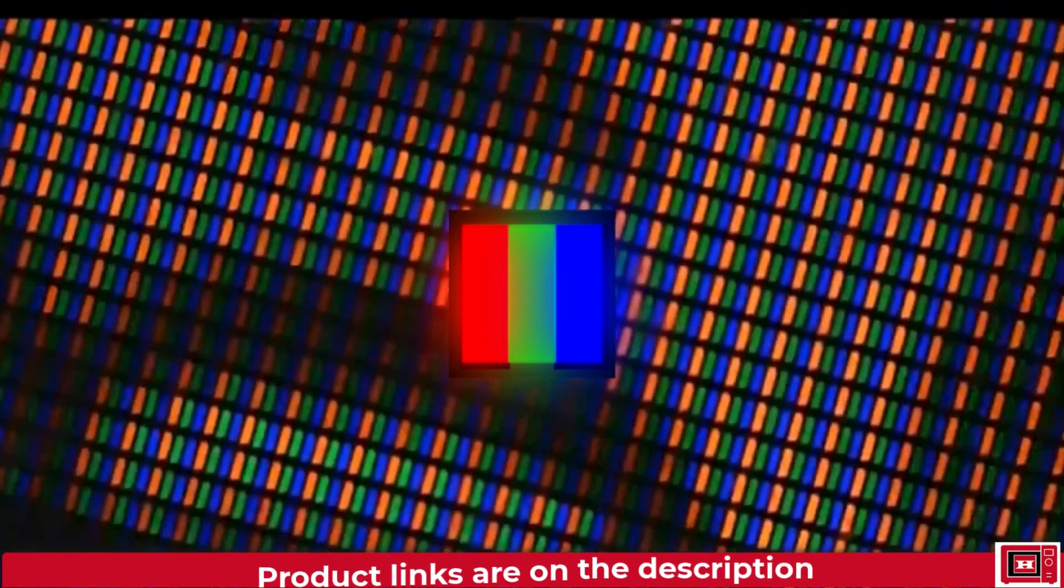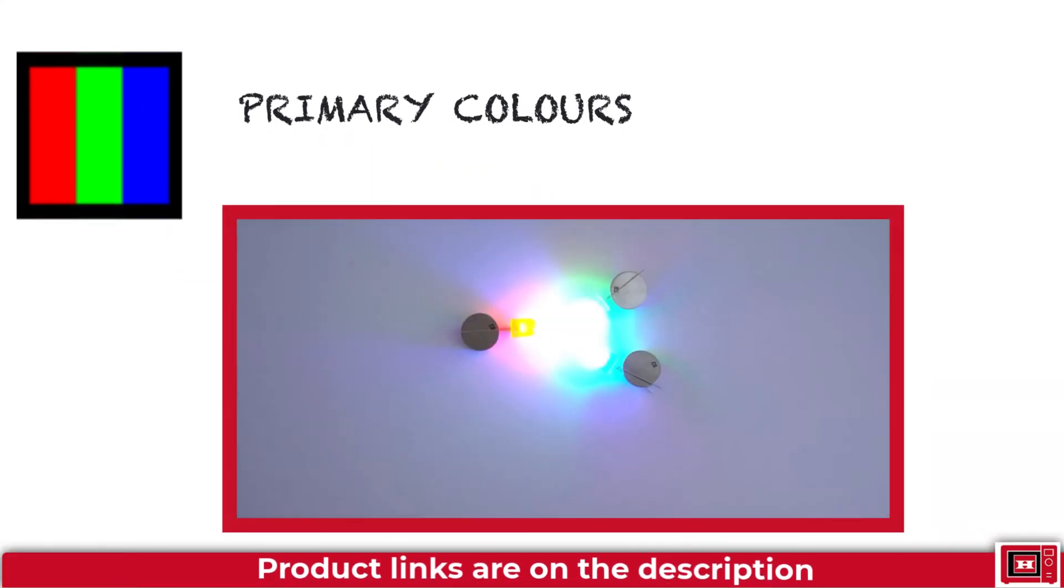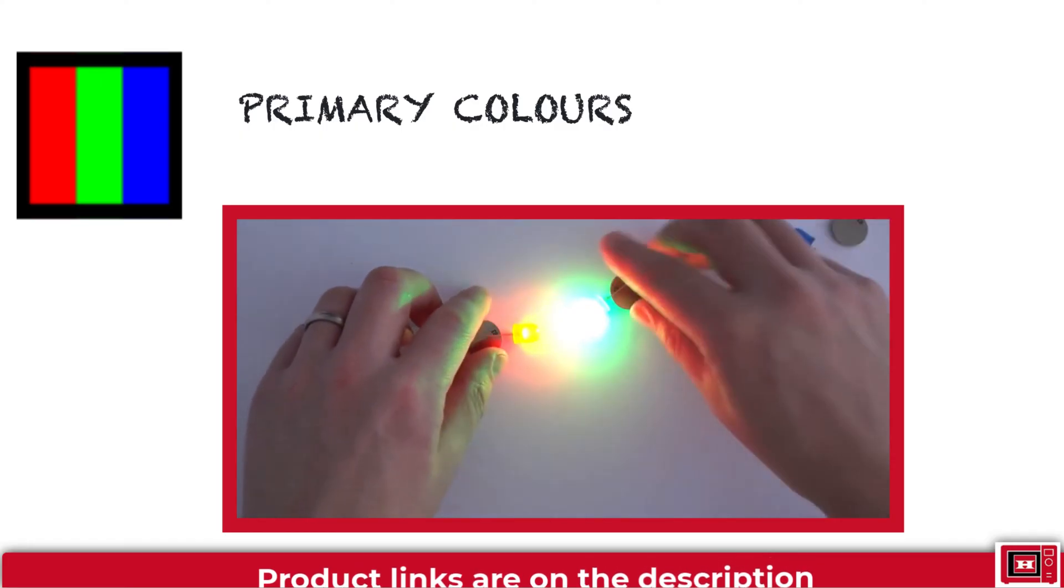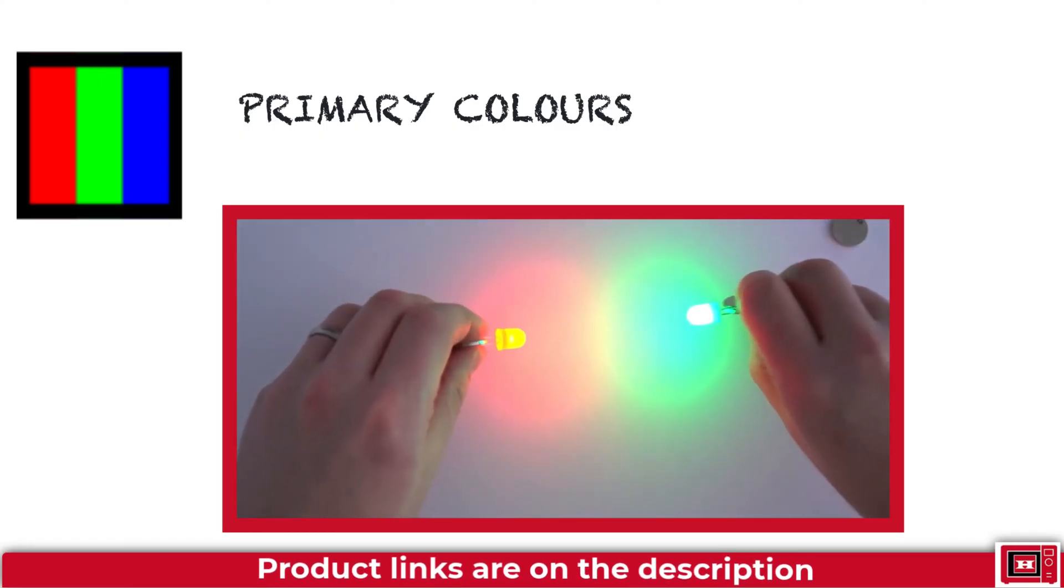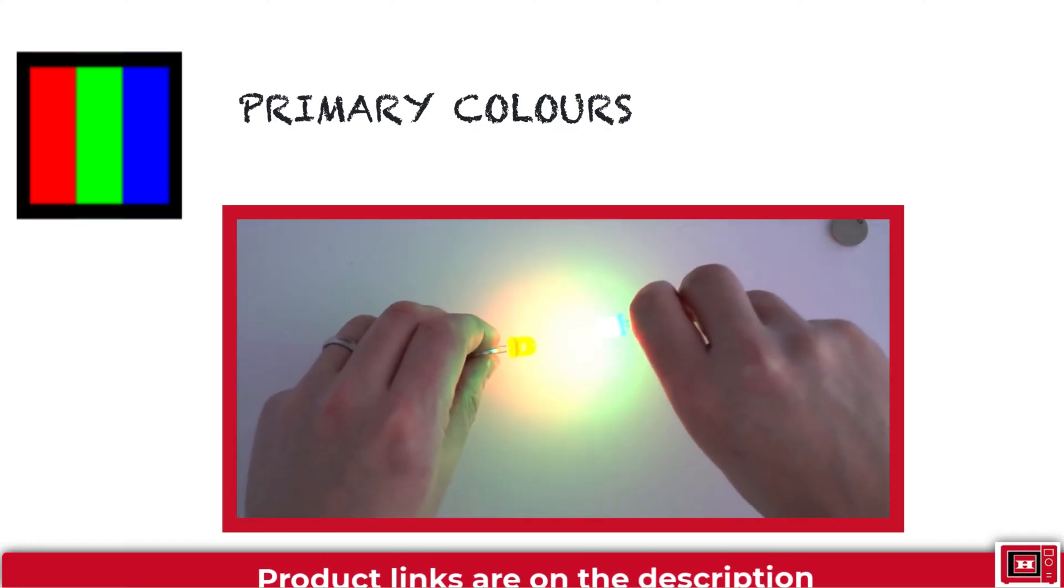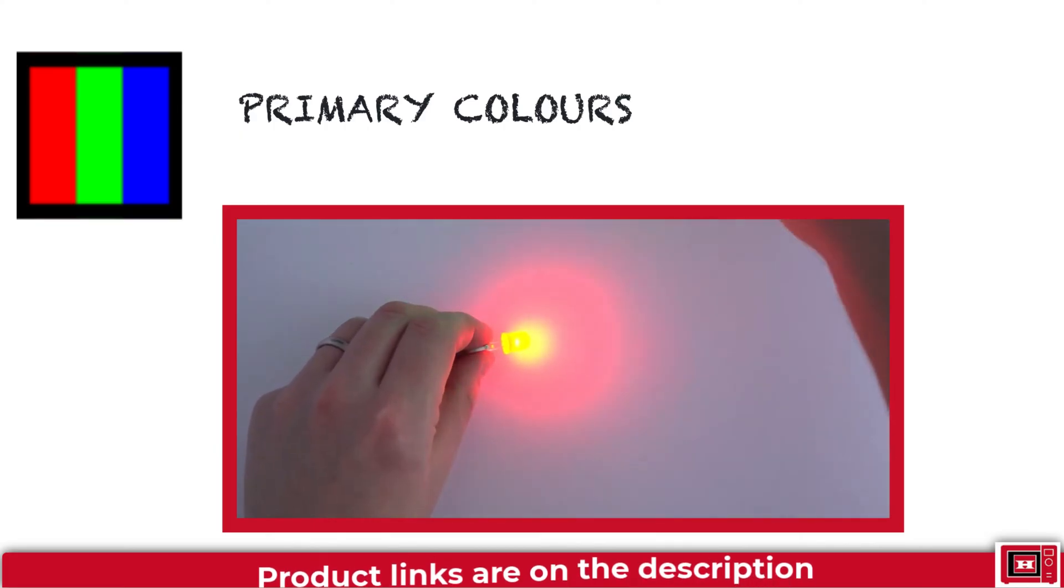They're called primary colors because when placed together, by adjusting the intensity of each color, you can produce every other color. If you mixed primary colors in your art classes, then deep down you already know what your TV does in each pixel.